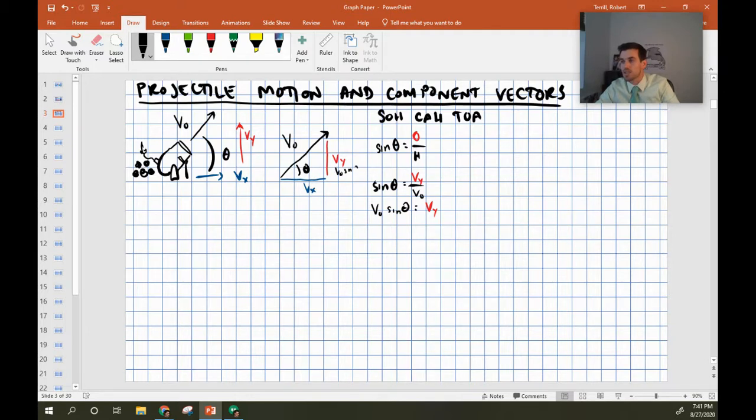Then for the cosine angle, the definition of cosine, this is the CA, cosine is adjacent over hypotenuse. So cosine is equal to this blue vector, our adjacent angle, over the hypotenuse. So I can substitute in V_X and V naught, and that leads us to the formula for V_X, which is V naught cosine theta.